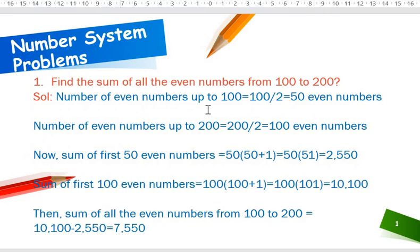Number of even numbers up to hundred equals n by two, that is hundred by two, which is fifty even numbers. Number of even numbers up to two hundred equals n by two, that is two hundred by two, which is one hundred even numbers.